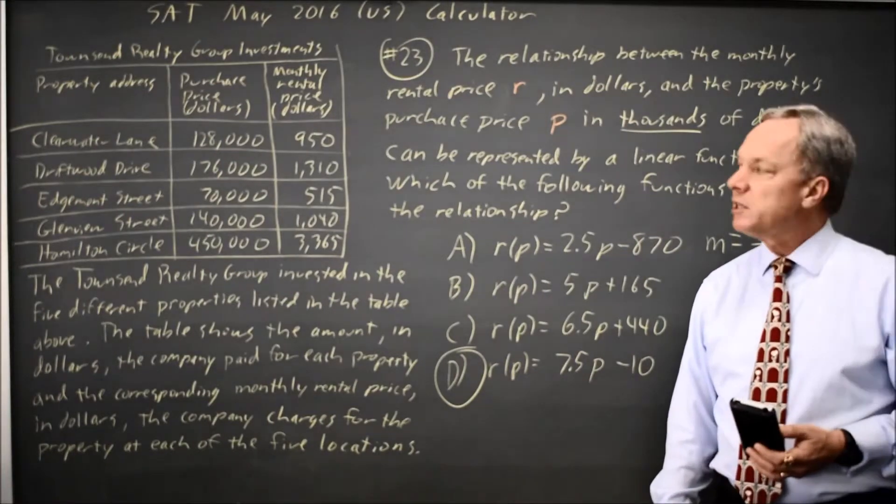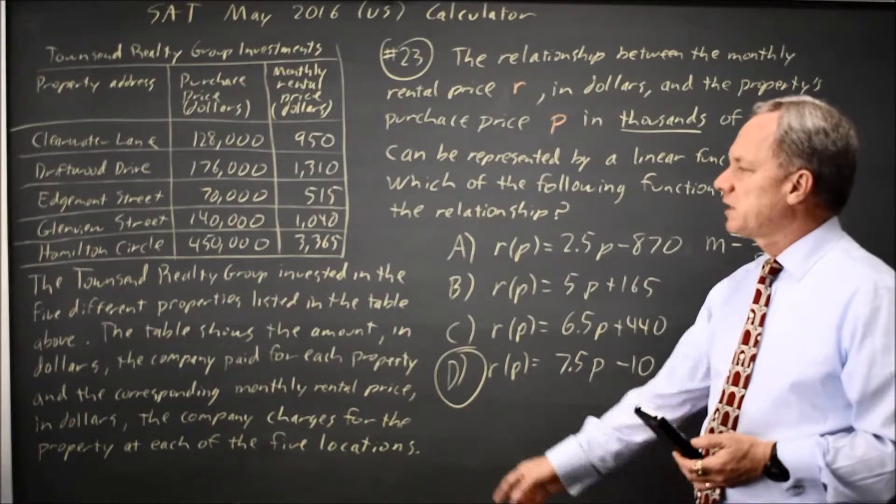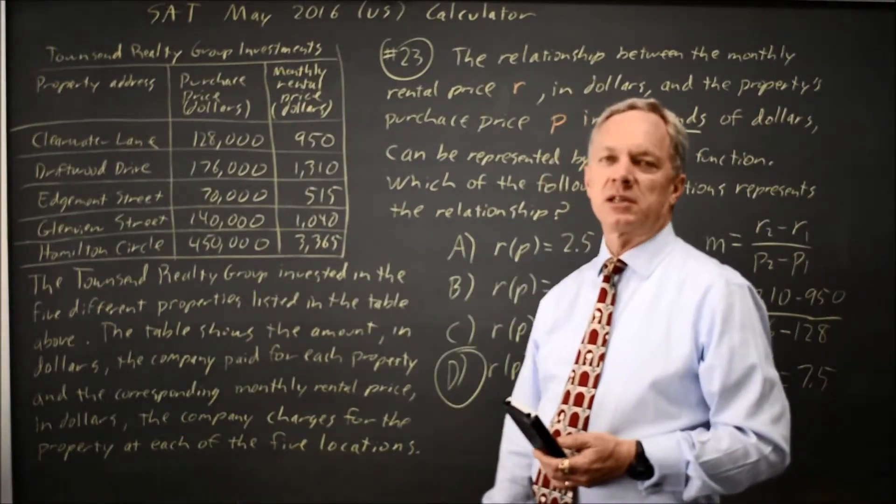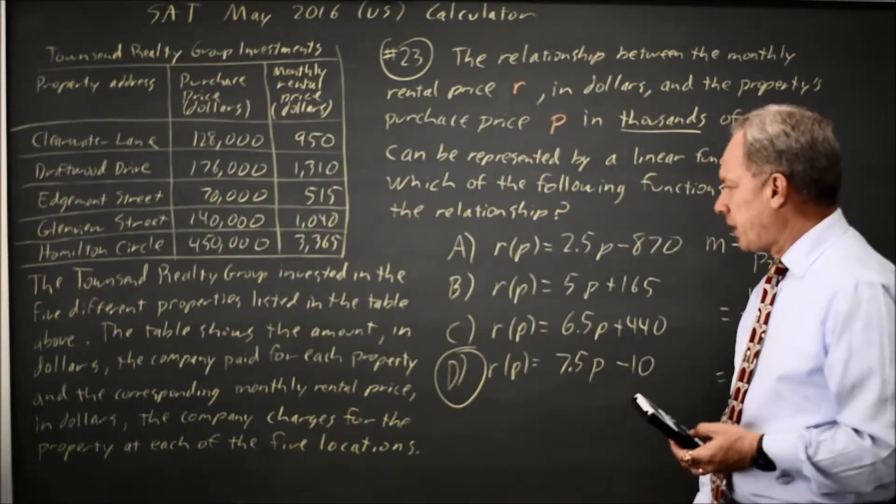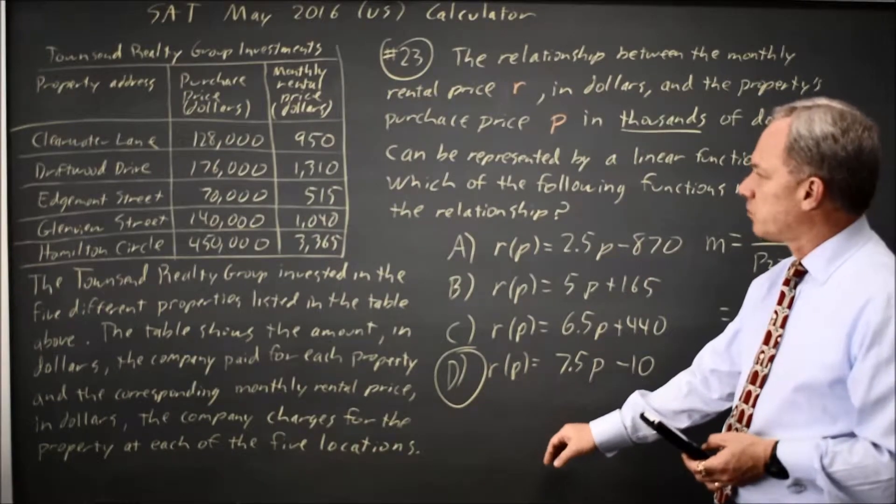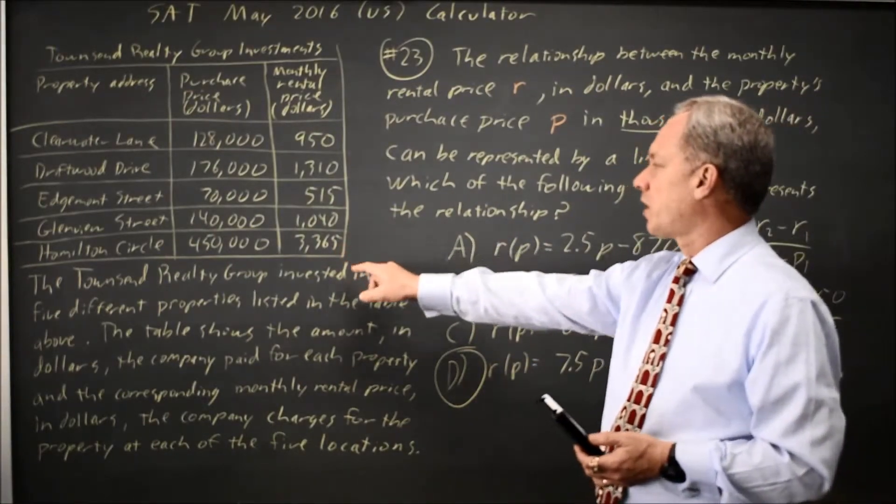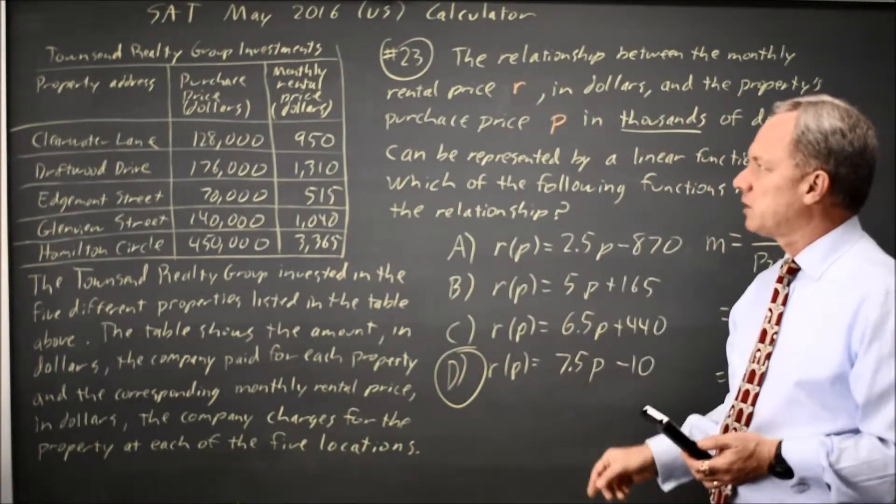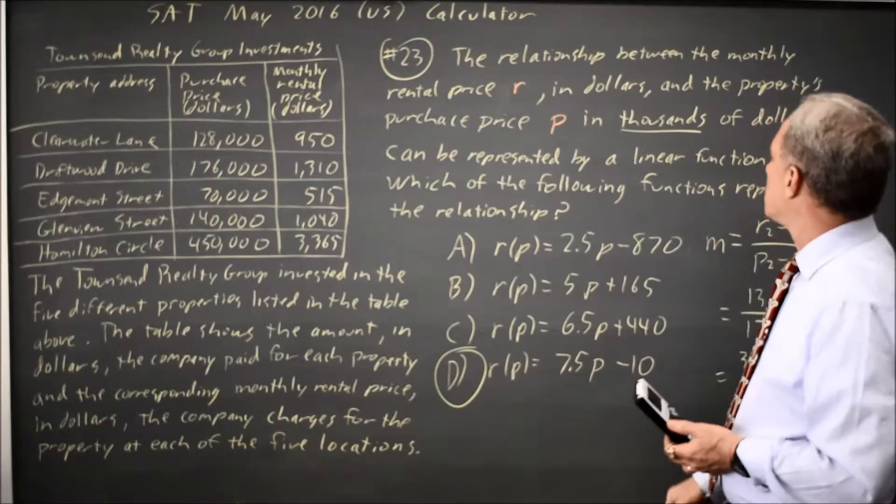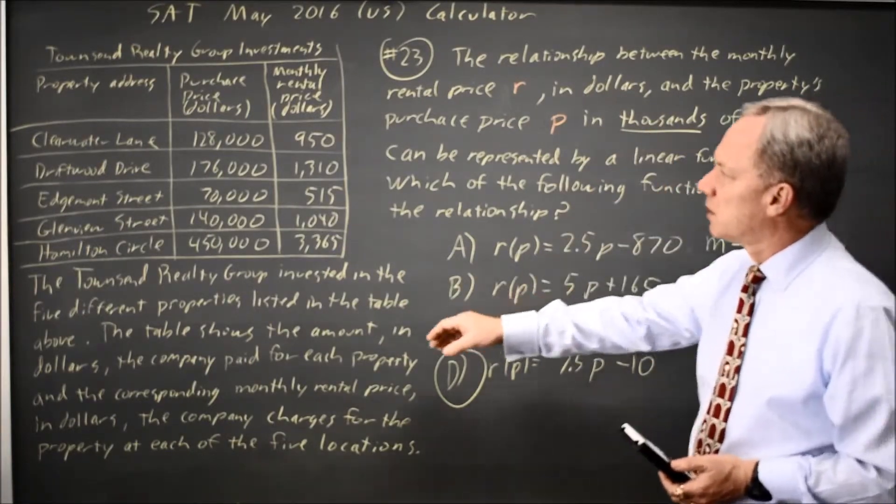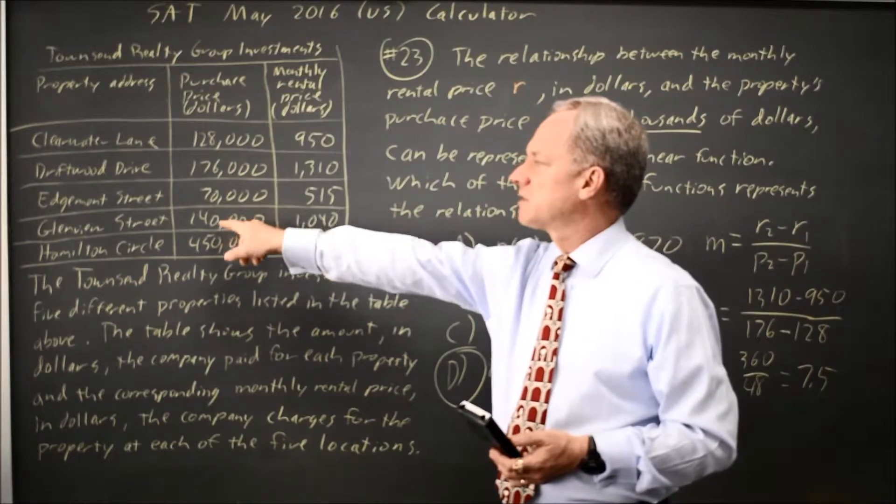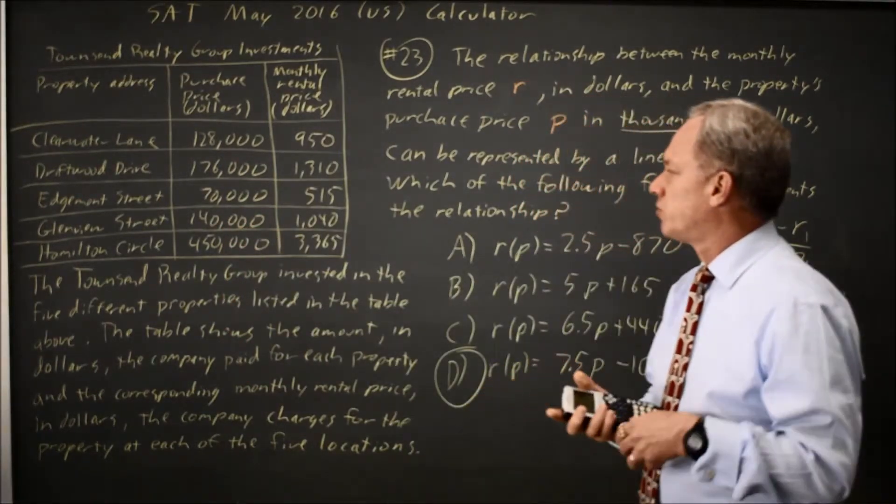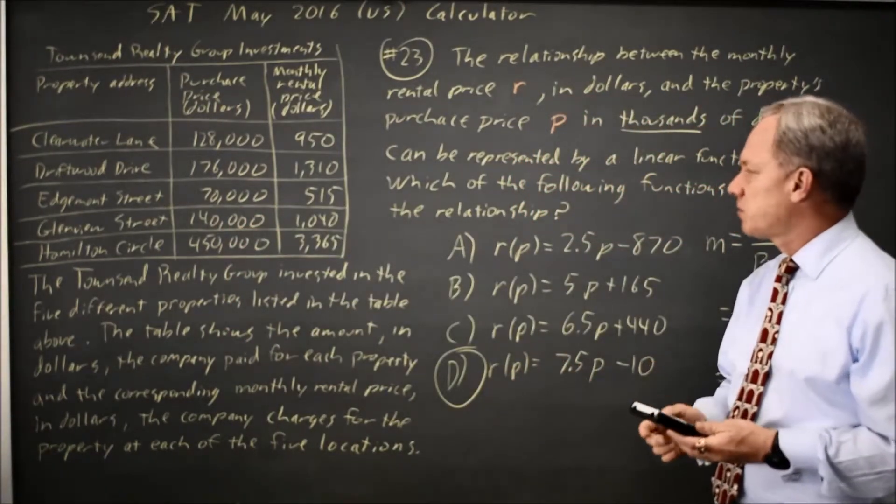The second option is to pick one property. Let's take Hamilton Circle. I like to pick the last one on the list and see if the rental price 3365 matches each formula for a purchase price in thousands of dollars of 128, 176, 70, 140, 450, whichever. It doesn't matter.